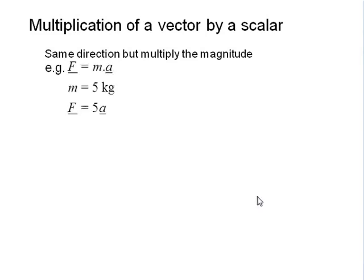So for example, if your force is mass times acceleration, which is a scalar times a vector, and I take the mass to be 5 kilograms, then the total force is 5 times the magnitude of acceleration.